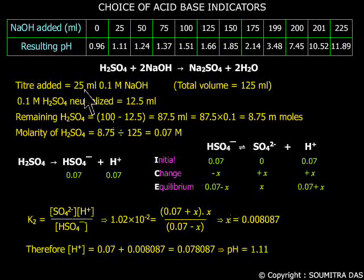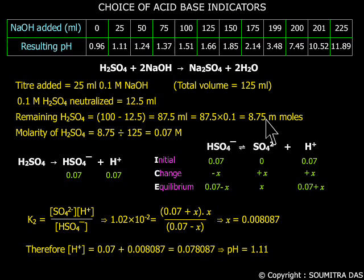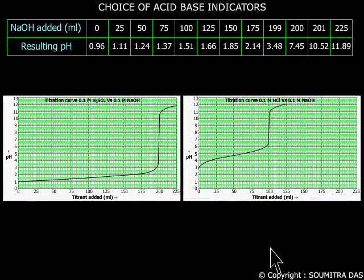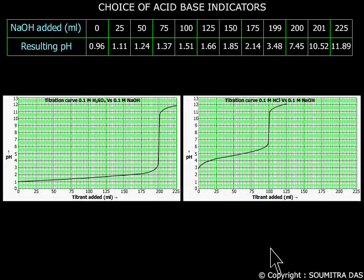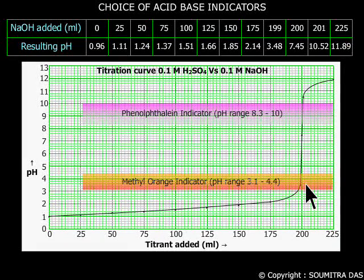When the titrant added is 25 ml, it neutralizes 12.5 ml of H₂SO₄, because 2 moles of NaOH neutralize 1 mole of H₂SO₄. Therefore 87.5 ml — or 8.75 millimoles — of acid still remain, which is equivalent to 0.07 molar concentration. So the second dissociation is like this. We calculate X from here and get the pH. From the titration curve it is clear that the curve is similar to the titration curve of a strong monoprotic acid like HCl.